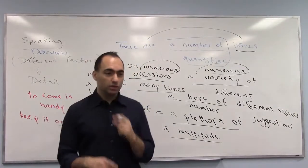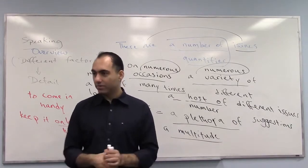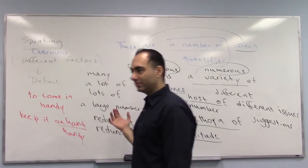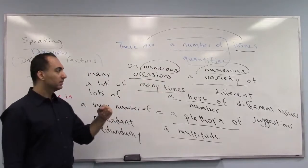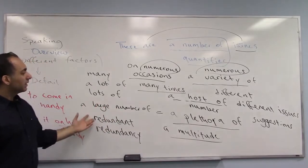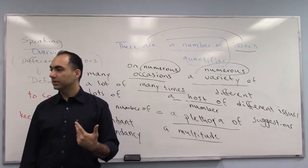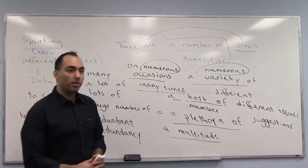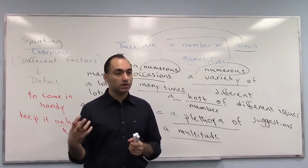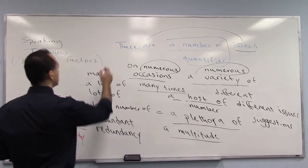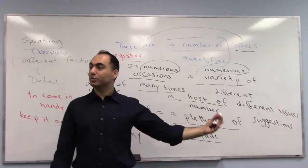When you write, you say 'many' once, 'many' twice, and 'a lot of' — but that's not formal. You need more formal options. Formal options would be: 'a large number of,' 'many,' 'numerous,' and sometimes 'a plethora of suggestions have been made,' 'a plethora of ideas are being discussed.' We'll also talk about format and style, because in writing, format and style are very important — especially register, which is the language level you use for writing.